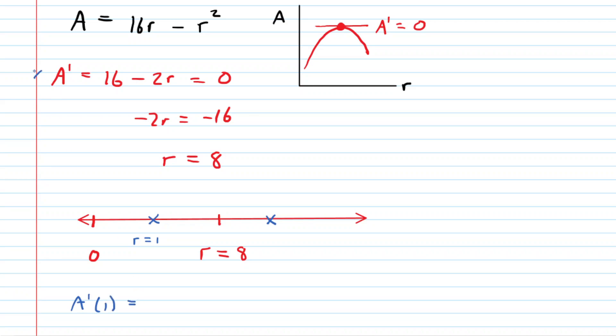So we would have A prime of 1. We're using this equation right up here for the derivative. That would equal 16 minus 2 times 1, and when you simplify that, you're going to get positive 14. Now, the fact that the derivative is positive means that the area function would be increasing within this little subinterval. So in other words, from 0 to 8, we know that the area is increasing.